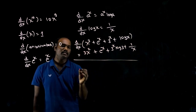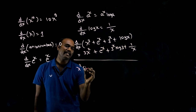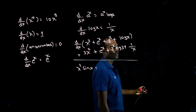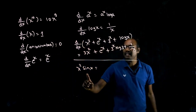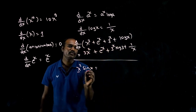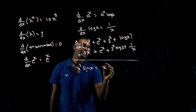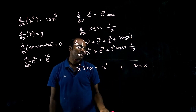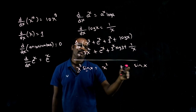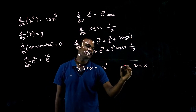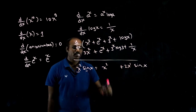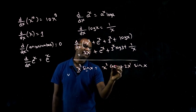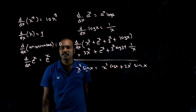Next, what we learned: product rule. If I have x² sin x, there are two functions. Write them: x² and sin x. Always take the first function times the differentiation of the second, plus the second times the differentiation of the first. x² differentiation is 2x. sin x differentiation is cos x.